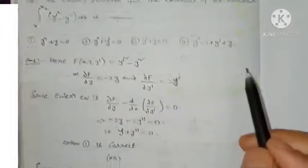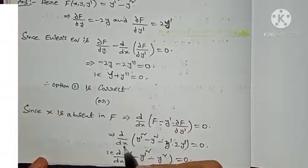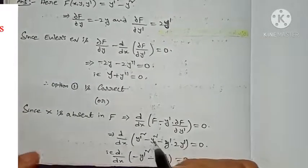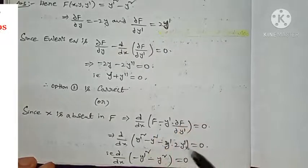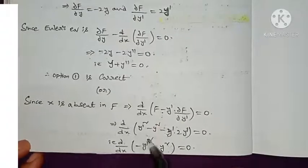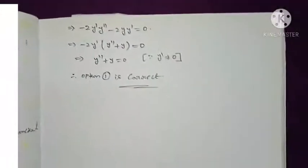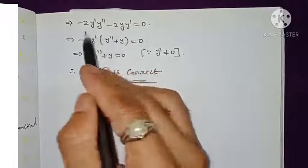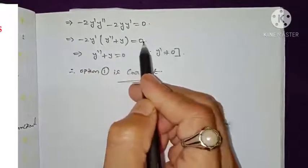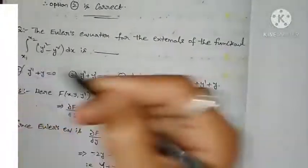We can also solve this using the alternative form. Since x is absent in the given function, we use d/dx[F − y-dash · ∂F/∂y-dash] = 0, i.e., d/dx[(y-dash² − y²) − y-dash · 2y-dash] = d/dx[−y-dash² − y²] = 0. Differentiating: −2y-dash · y-double-dash − 2y · y-dash = 0. Taking −2y-dash common: y-double-dash + y = 0. Since y-dash ≠ 0, we confirm option 1: y-double-dash + y = 0 is correct.